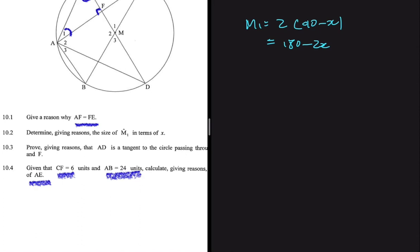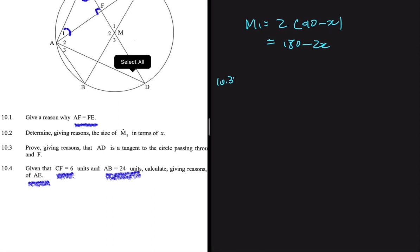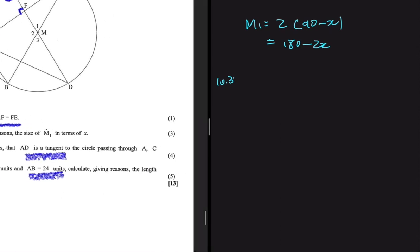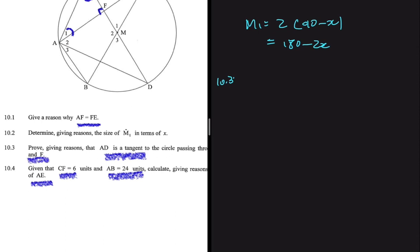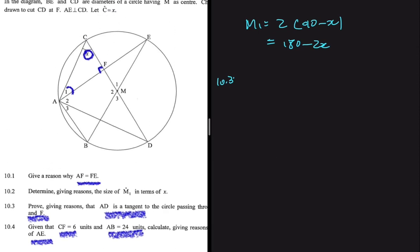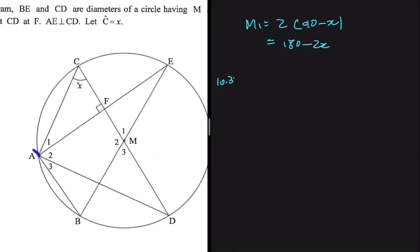10.3 says: prove with reasons that AD is a tangent to the circle passing through A, C, and F. These questions can be a bit challenging, but the best way is to draw the circle through A, C, and F so you can have clarity. Let me draw a circle passing through A, then C, then F.